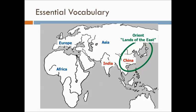Some essential vocabulary. If you look on the far right-hand side of the screen, you'll notice it's circled in green — it's called the Orient, Lands of the East. This was the goal of all the European explorers: to find a route to the Orient, the Lands of the East.